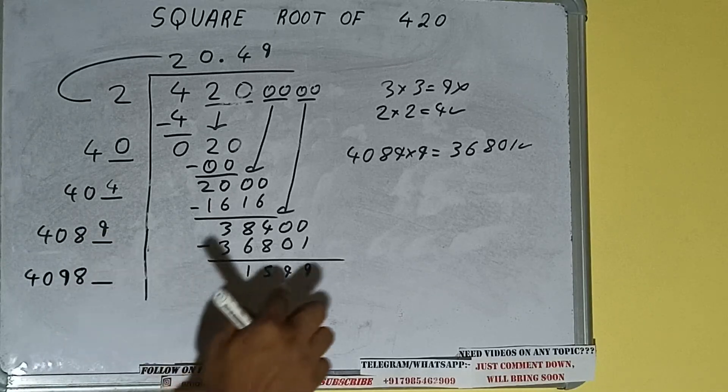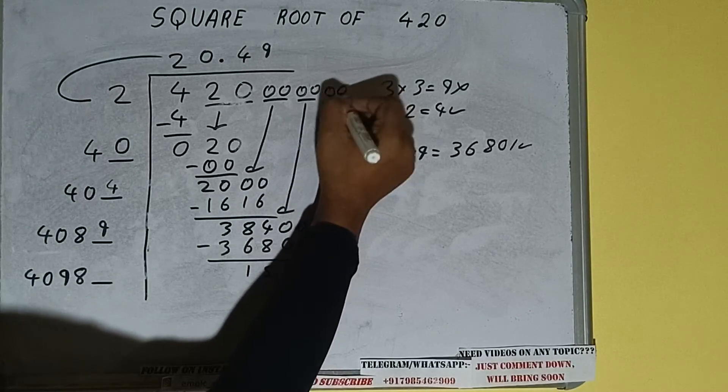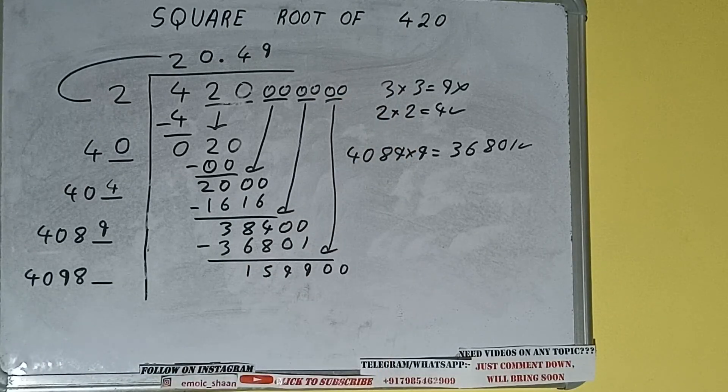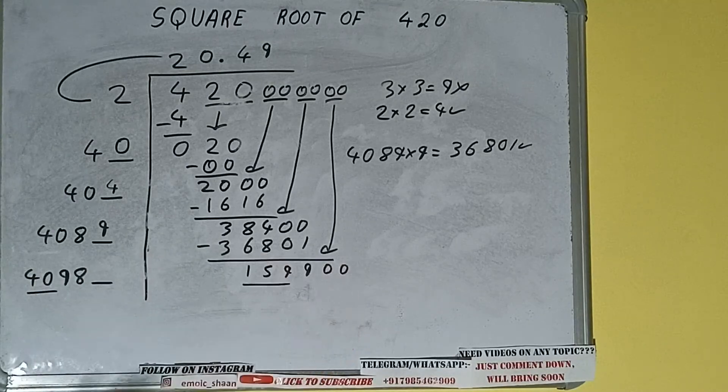And one digit extra. And this number we need to make it big, so bring the next pair of zeros down and it will be 159,900. Compare this: 40 and 159.